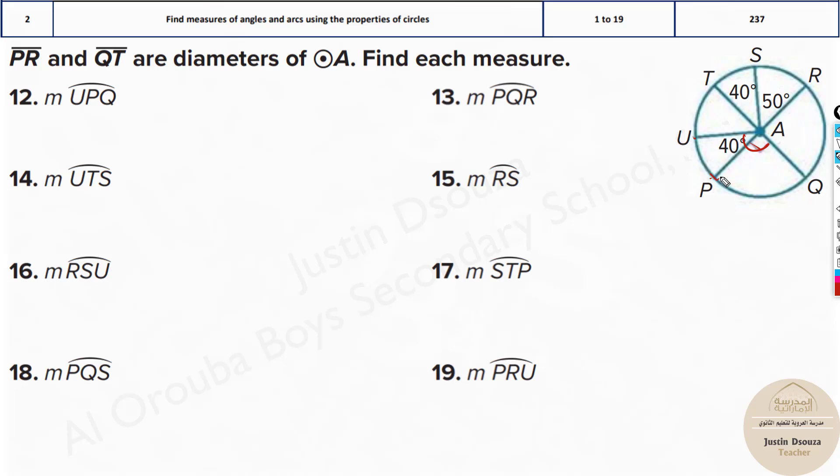I'll do one more. Say I'll do the last one PRU. See now PRU, don't go like this because they have told you PRU, so we have to go like this. Now we know the total circle is 360 minus the remaining part 40, so it must be 320 here.